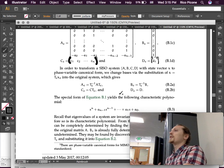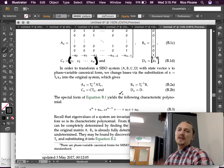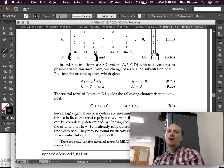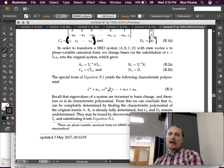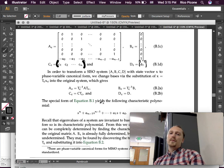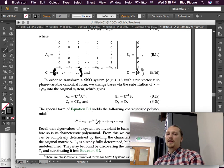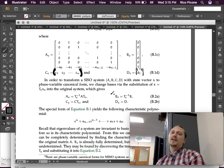So, then the B matrix is similar. We've done basis transformations of state models before. So, this is the same. It's just that we have a very specific transformation matrix TC. The special form of equation B1 yields the following characteristic polynomial, which is this.